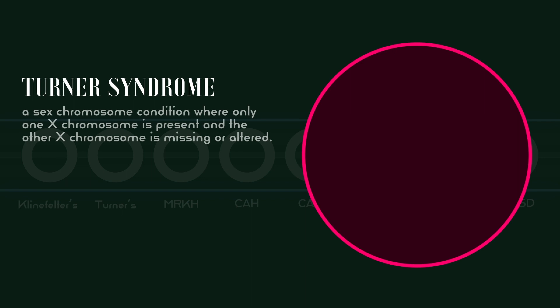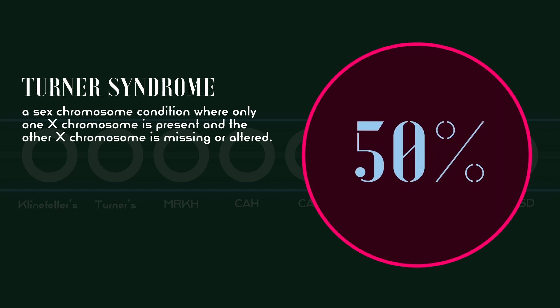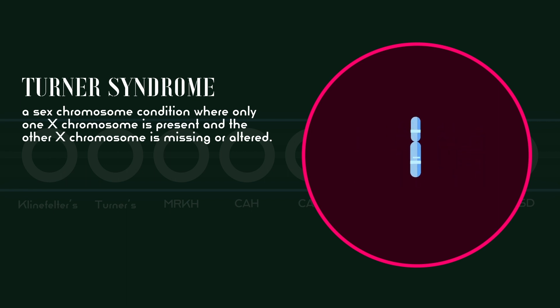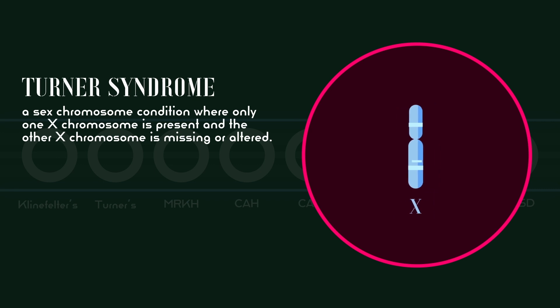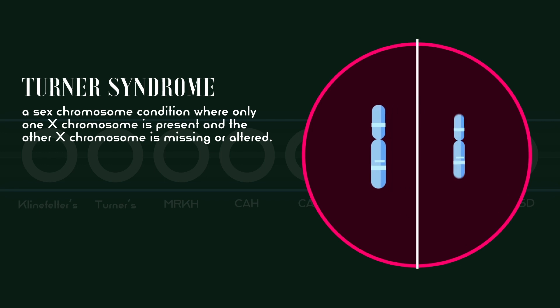Turner Syndrome is a sex chromosome condition in females where only one X chromosome is present and the other X chromosome is missing or altered. Half of all individuals with Turner's have a karyotype of 45X, known as monosomy X, instead of the typical 46XX, and the other half have X chromosome mosaicism, where some cells in the body are 45X and others are 46XX.